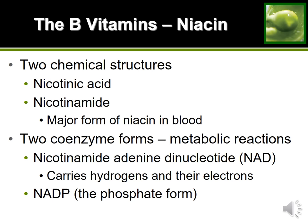Next is niacin, which makes the second coenzyme that picks up hydrogens and electrons: coenzyme NAD. NAD is actually the main coenzyme that picks up hydrogens and electrons from the very beginning of the metabolism cycle. So we now have two such coenzymes — FAD made by riboflavin, and NAD made by niacin.